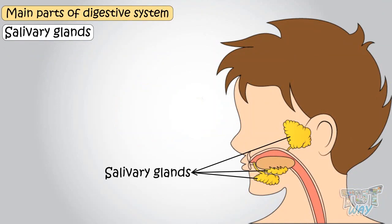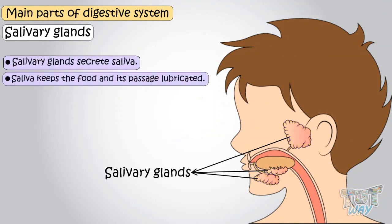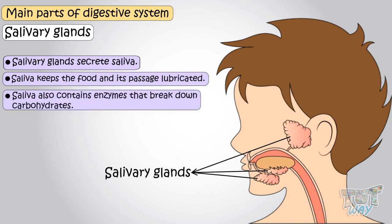Salivary glands secrete saliva in the mouth. Saliva keeps the food and its passage lubricated. Saliva also contains enzymes that break down carbohydrates.